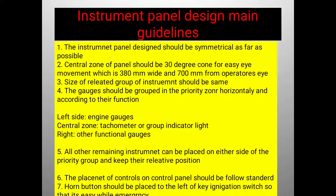Gauges should be grouped in priority zones horizontally and according to their function. In the instrument panel, pressure gauge, temperature gauge, exclamator, and speed are placed based on their importance — on the left side, central zone, and right side.